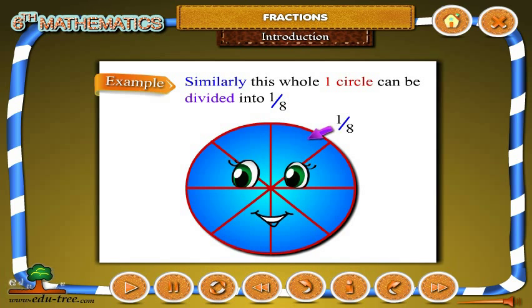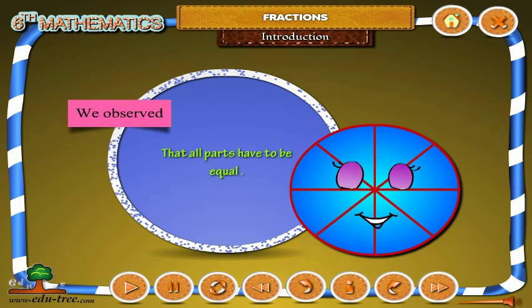Similarly, this whole one circle can be divided into one by eight. We observed that all parts have to be equal.